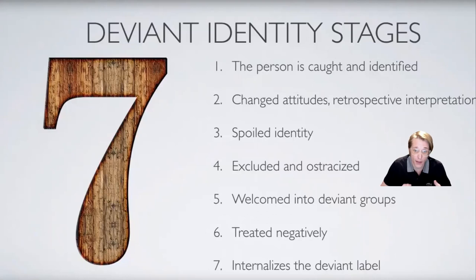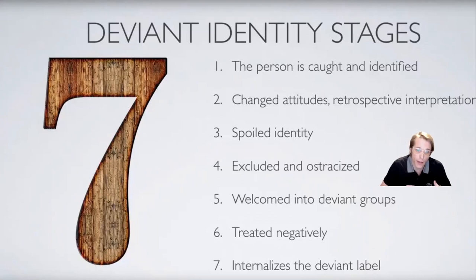Fourth, he, she, or they is excluded and ostracized from the group. Then, fifth, he, she, or they may be welcomed and included into deviant groups. Sixth, the person is treated differently in a negative way by those in normative society. And finally, he, she, or they internalizes the label and begins to think of themselves as deviant.